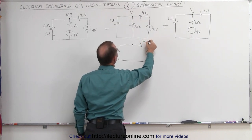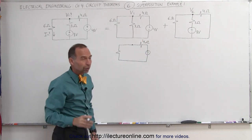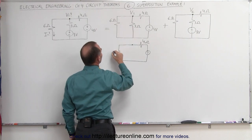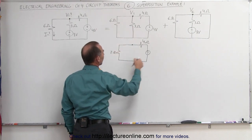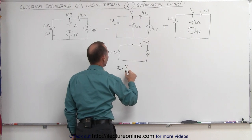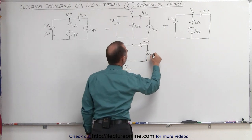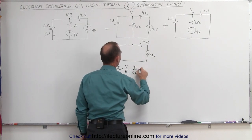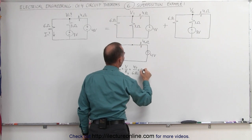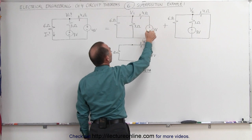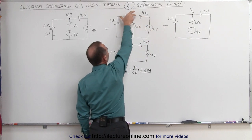The 4 ohm resistor remains, and combining the 6 and 3 ohm resistors in parallel using product over sum: 3 times 6 is 18, divided by the sum of 9, gives an equivalent of 2 ohms. We have a total resistance of 6 ohms, so I total equals V divided by R total. With a 4 volt source, that's 4 volts divided by 6 ohms, which equals 2/3 of an amp, or 0.667 amps — the current through the 4 ohm resistor and the parallel combination.